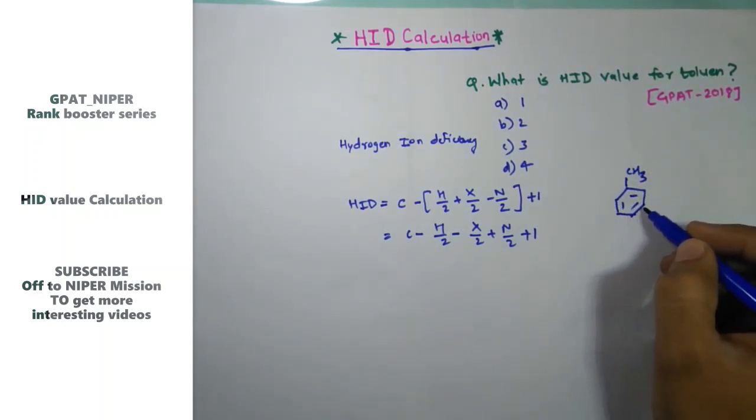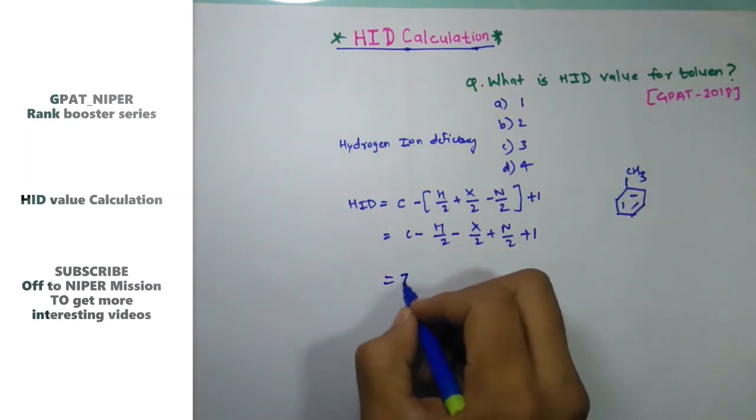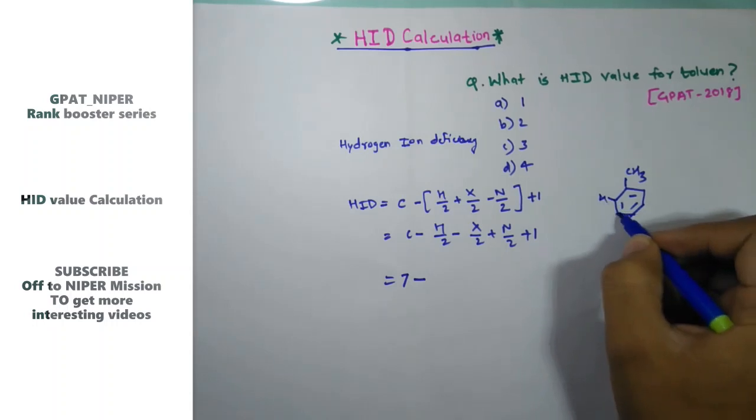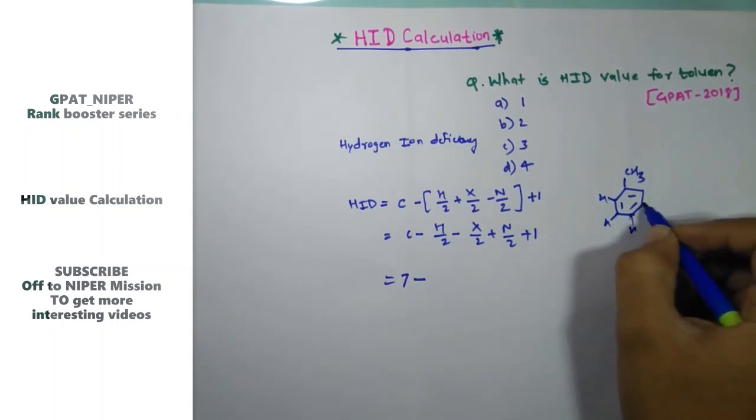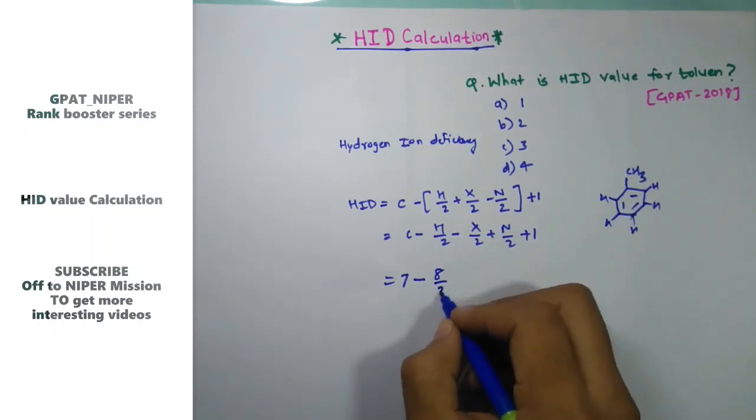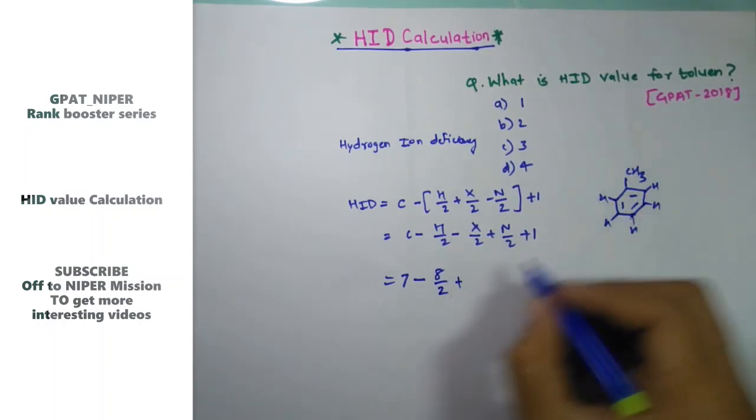How many hydrogens? 1, 2, 3, 4, 5, and this 3. So 5 plus 3 is 8. That's 8/2. Plus how many halogens? No halogens, so 0/2.